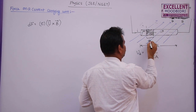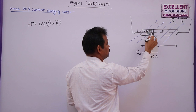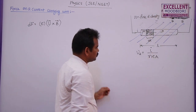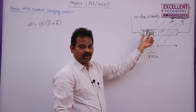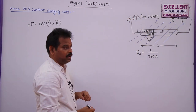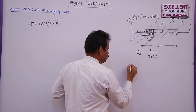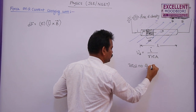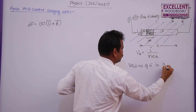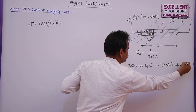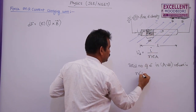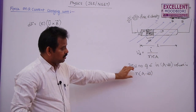Taking a small elemental portion of length dL, where N is the free electron density (number of electrons per unit volume). The total number of electrons in the cross-sectional area A and length dL of this conductor is N × A × dL. These are all the electrons drifting in that small volume.